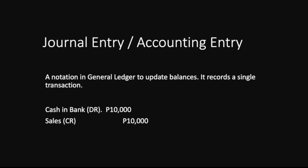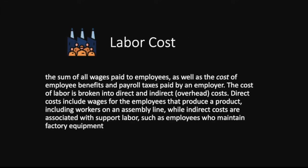The journal entry — also called accounting entry or double entry — is a notation in the general ledger to update balances, recording a single transaction. Each journal entry has a debit and a credit, and the entry must always be in balance — meaning the total debit must always equal the total credit. Later modules will discuss how journal entries affect financial statements and balances in your chart of accounts.